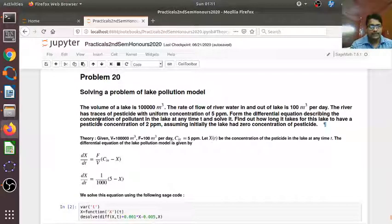The river has traces of pesticide with uniform concentration of 5 parts per million ppm. Form the differential equation describing the concentration of pollutant in the lake at any time t and solve it. Find out how long it takes for this lake to have a pesticide concentration of 2 parts per million, assuming initially that the lake had zero concentration of pesticides.